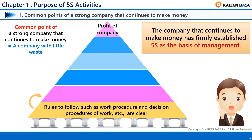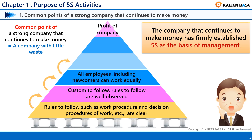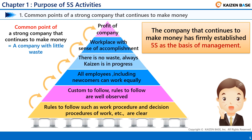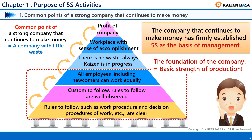A company is linked to profits in the following order. First, rules to follow — such as work procedures and decision procedures of work — are clear. The custom and rules to follow are well observed. All employees, including newcomers, can work equally. There is no waste, always cut and in progress. As a result, there is a workplace with a sense of accomplishment. These things lead to profit of the company. Among these, the foundation of the company is the basic strength of production, including 5S. It is no exaggeration to say that the size of a company's profit will be influenced by how solid this production foundation is.